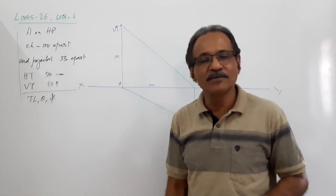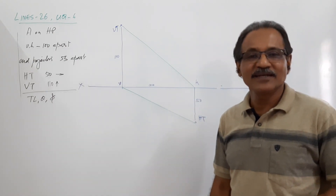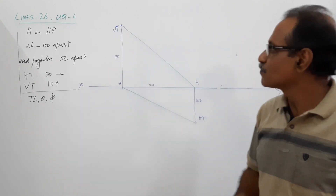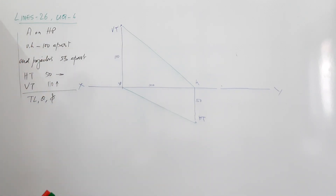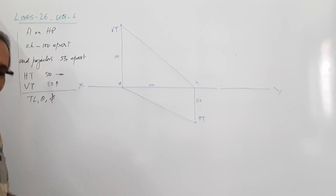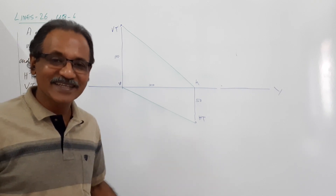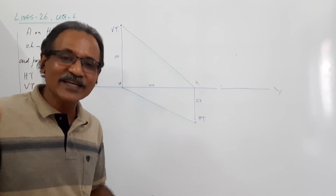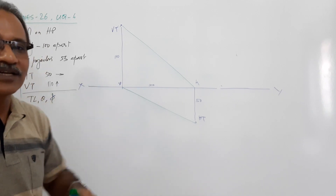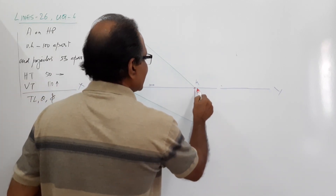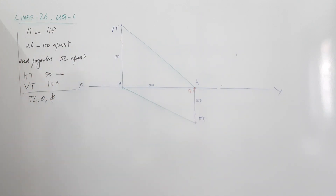The other information available is: A is on HP. What does it mean? If A is on HP, it means that A dash (A') is on XY. Its elevation is somewhere on XY. This elevation line meets XY at only one point — so that intersection point is A dash.